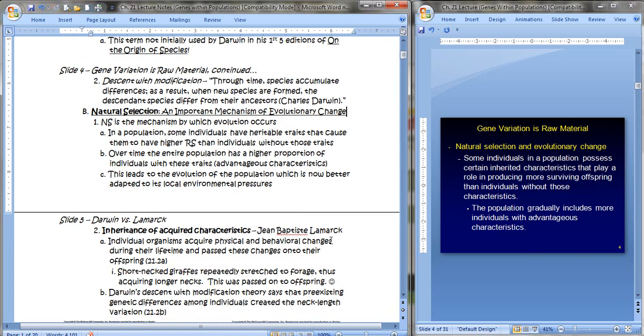So descent with modification says that through time, species accumulate differences. As a result, when new species form, the descended species differ from their ancestors. And that's how Darwin put descent with modification.